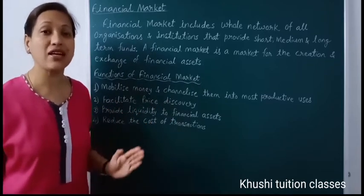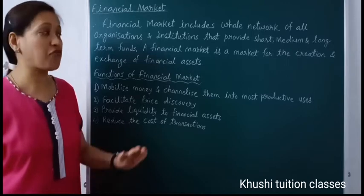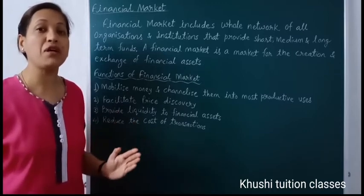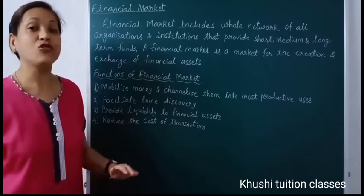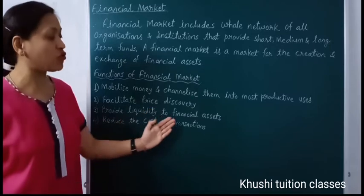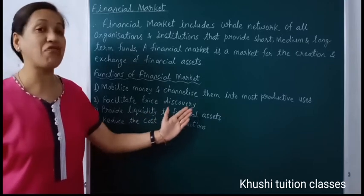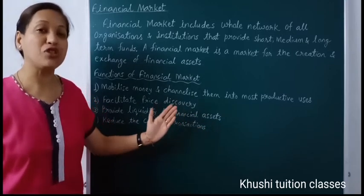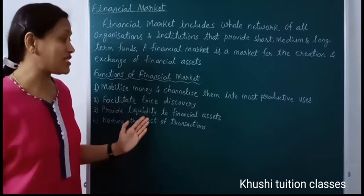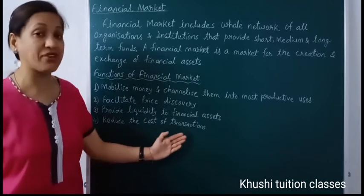The second function is to facilitate price discovery. To decide the price of any product or service, its demand and supply are compared. Similarly, in financial markets, the fluctuations in prices of securities issued are also based on demand and supply. The third function is to provide liquidity to financial assets. Liquidity means to convert any asset into cash. Whatever financial securities or assets you have, you can sell them whenever you want and convert them into cash — this facility is possible because of the financial market. The fourth function is to reduce the cost of transaction.